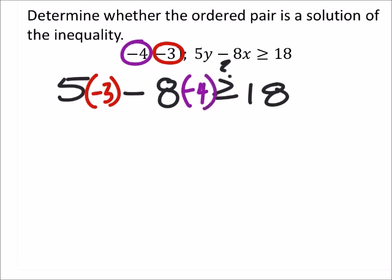And again, this is just seeing as a question mark to see if this is true or not. So 5 times negative 3 is negative 15. Minus 8 times negative 4 is negative 32. And this should be greater than or equal to 18.